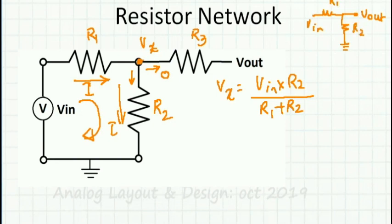The intermediate voltage VX is nothing but Vin into R2 divided by (R1 plus R2). Whenever you have a network like this, Vout is always given by this resistor divider equation — you must always memorize this equation.